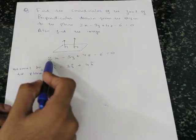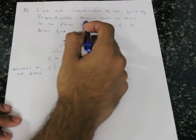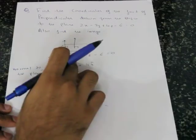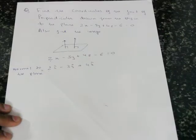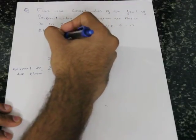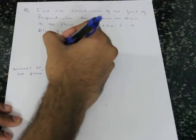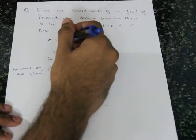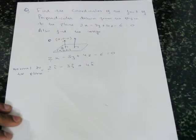In this particular case we have been given the plane 2x minus 3y plus 4z minus 6 equals 0, and we are told to find the foot of the perpendicular drawn from the point (0, 0, 0), that is the origin, to this plane. The normal vector for this plane is 2i-cap minus 3j-cap plus 4k-cap. We need to find the foot of the perpendicular, which we name Q, with coordinates (x1, y1, z1).